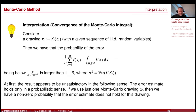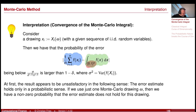Recall we are looking at the Monte Carlo integral of a function on the d-dimensional hypercube. We approximate this d-dimensional integral, and we have a convergence rate of order 1 divided by square root of n. The dimension does not appear in this.